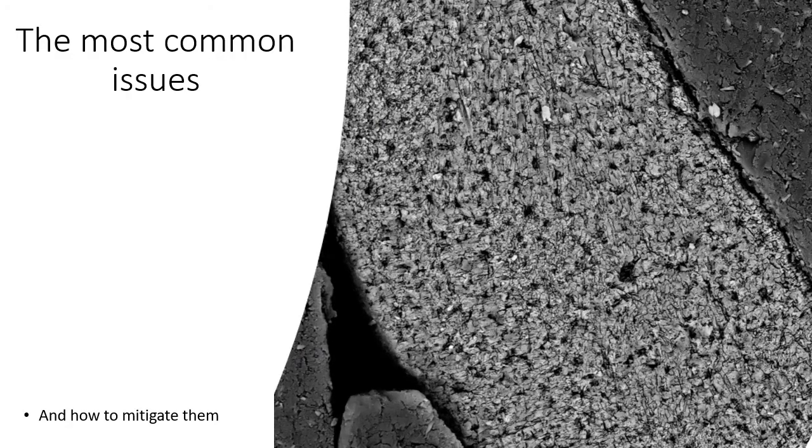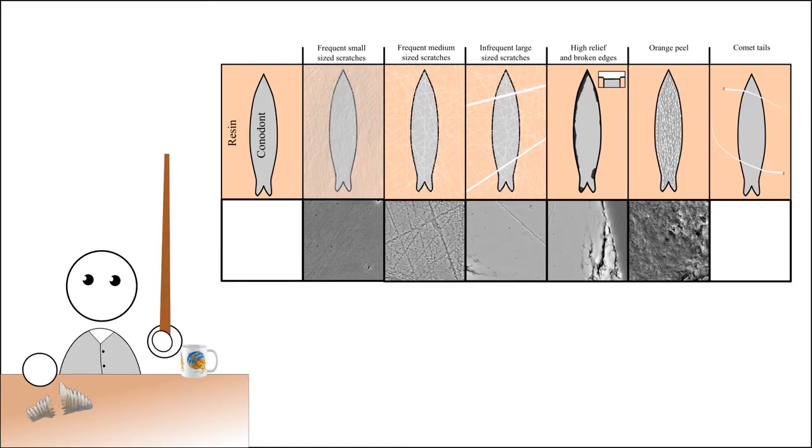Now I'm going to quickly address the most common issues seen while polishing samples. These are the most common surface features that we see. The first is small frequent scratches that are seen on the surface. These are generally quite fine. Especially if you're on the 6 or 3 micron stage, you can easily see these under a microscope. It's just the diamonds doing their job.